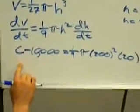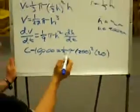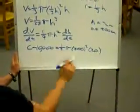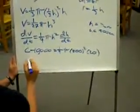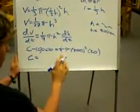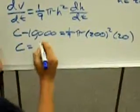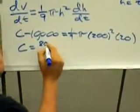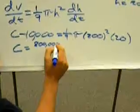Now we are going to solve for C, which is the rate in which the water is being pumped into our tank. So we are going to subtract 10,000 from this side and from this side. So we have C is equal to one-ninth times 200 squared times 20, becomes 800,000 over 9 pi.